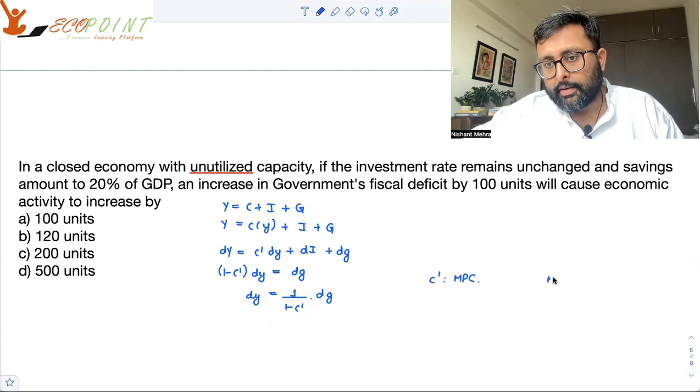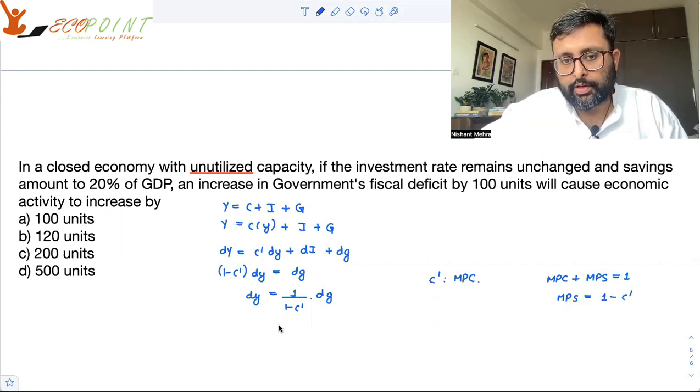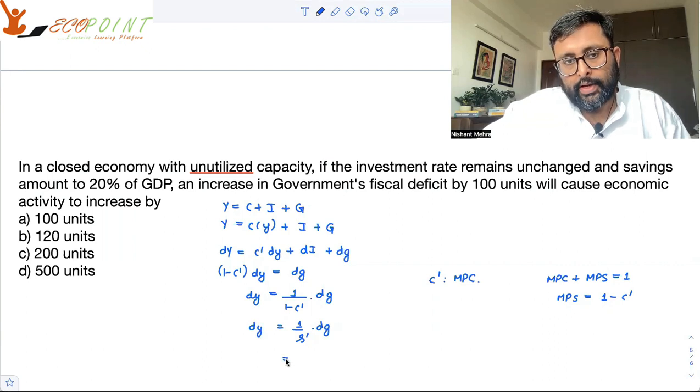And you notice that MPC plus MPS is equal to 1. So MPS is 1 minus c dash, or you can say savings rate or s dash. So s dash is 20% of GDP, 1 upon 0.2.